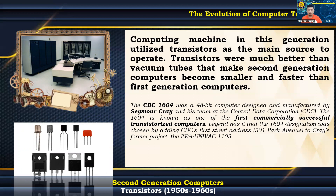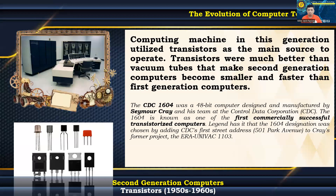The CDC-1604 was a 48-bit computer designed and manufactured by Seymour Cray and his team at the Control Data Corporation. The CDC 1604 is known as one of the first commercially successful transistorized computers. Legend has it that the 1604 number was a convenient addition by adding CDC's first street address, 151 Forest, to Cray's former project, the ERA UNIVAC 1103.